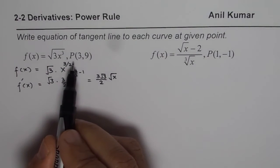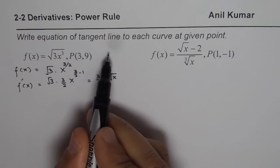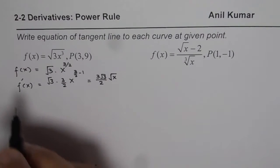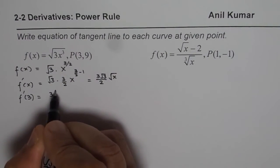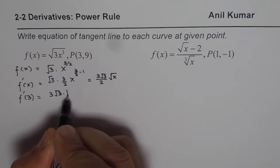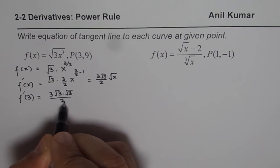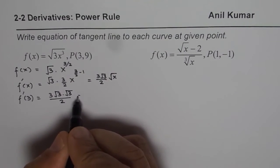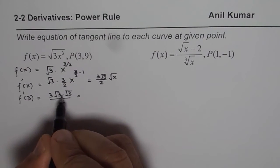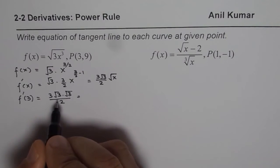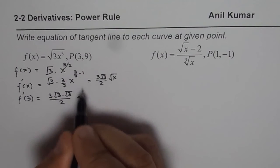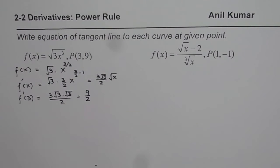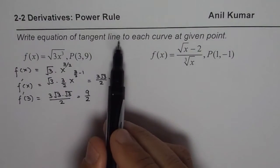You need to find the slope of the tangent line at the point, and then the equation. The point is x = 3. So f'(3) — we substitute 3 — gives us 3√3 times √3 over 2. That gives you 3 times 3 is 9, and √3 times √3 is 3, so 3 times 3 is 9. So the slope at x = 3 is 9/2. That is how you get the slope of the tangent line at the given point.